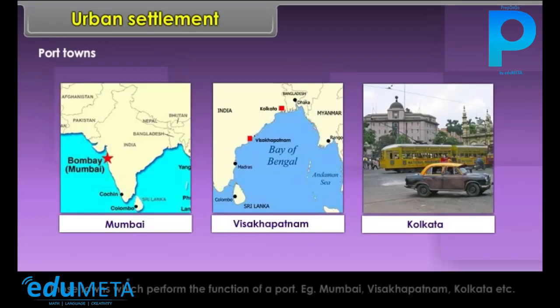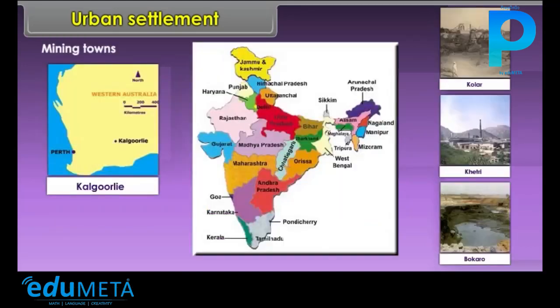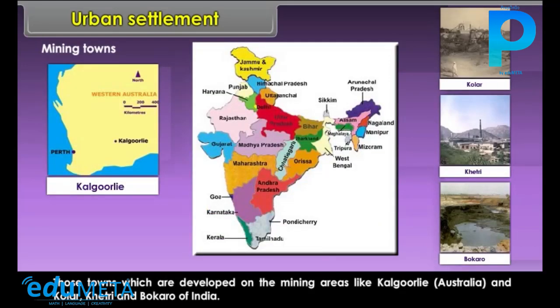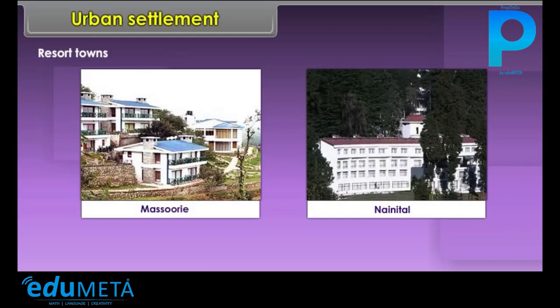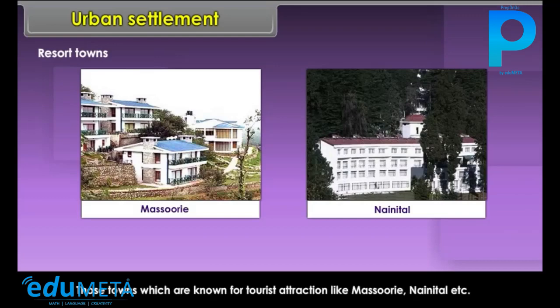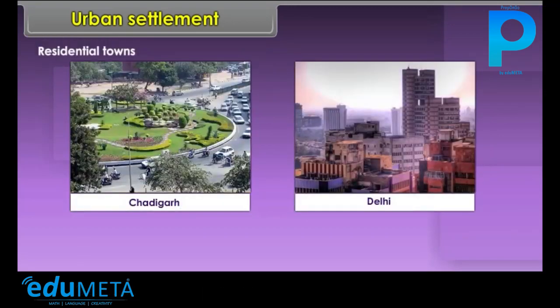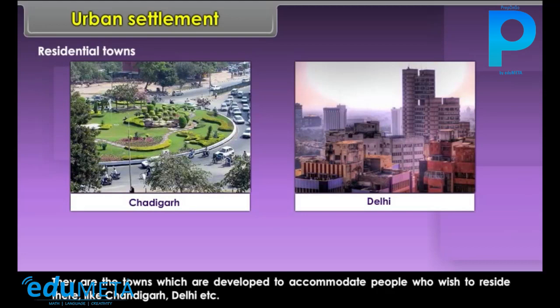Port Towns: Those towns which perform the function of a port — for example, Mumbai, Vishakapatnam, Kolkata, etc. Mining Towns: Those towns which are developed on the mining areas, like Kalgoorlie, Australia, and Kohler, Khetri, and Bokaro of India. Resort Towns: Those towns which are known for tourist attraction, like Mussoorie, Nainital, etc. Residential Towns: They are the towns which are developed to accommodate people who wish to reside there, like Chandigarh, Delhi, etc.